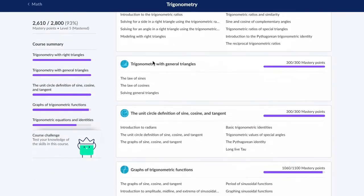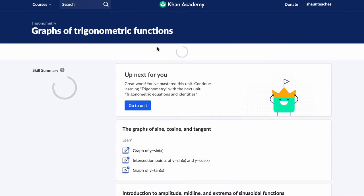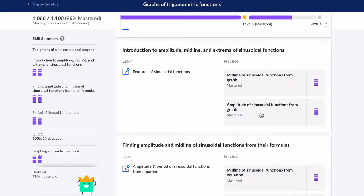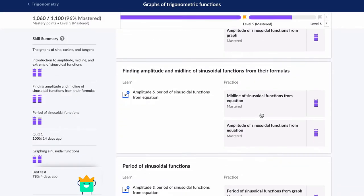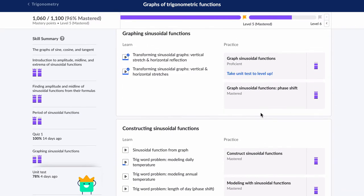Hello, welcome. We're looking at Khan Academy. We're looking at trig, graphs of trig functions, and we are going to graph some functions right in their widget that they have. We're going to look at, where is it? There it is. Under graphing sinusoidal functions, we're going to graph them. So let's go.